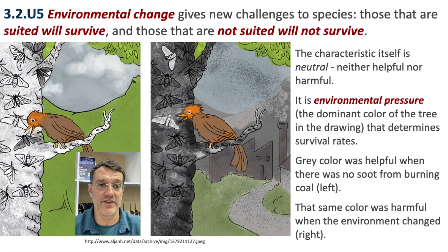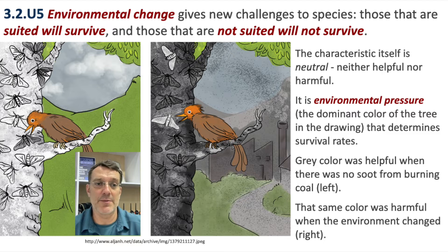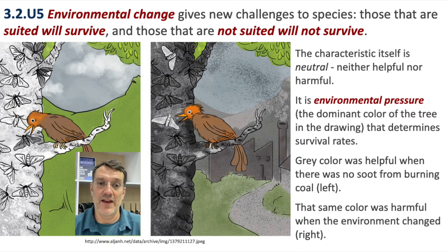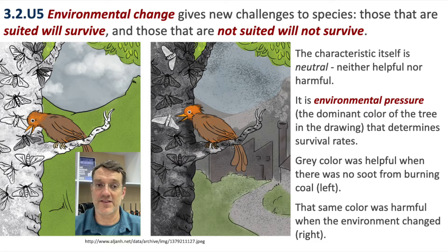The most classic example of this is the English peppered moth. In the English countryside before the industrial revolution, the peppered moth liked to live in birch trees, which have pale gray bark. Pale gray peppered moths were easily camouflaged there, while moths with darker pigmentation were more readily seen and eaten by predators. Then we started burning fossil fuels and leaving soot on everything, covering the birch trees in a dark layer, which meant the lighter-colored moths began to stand out.